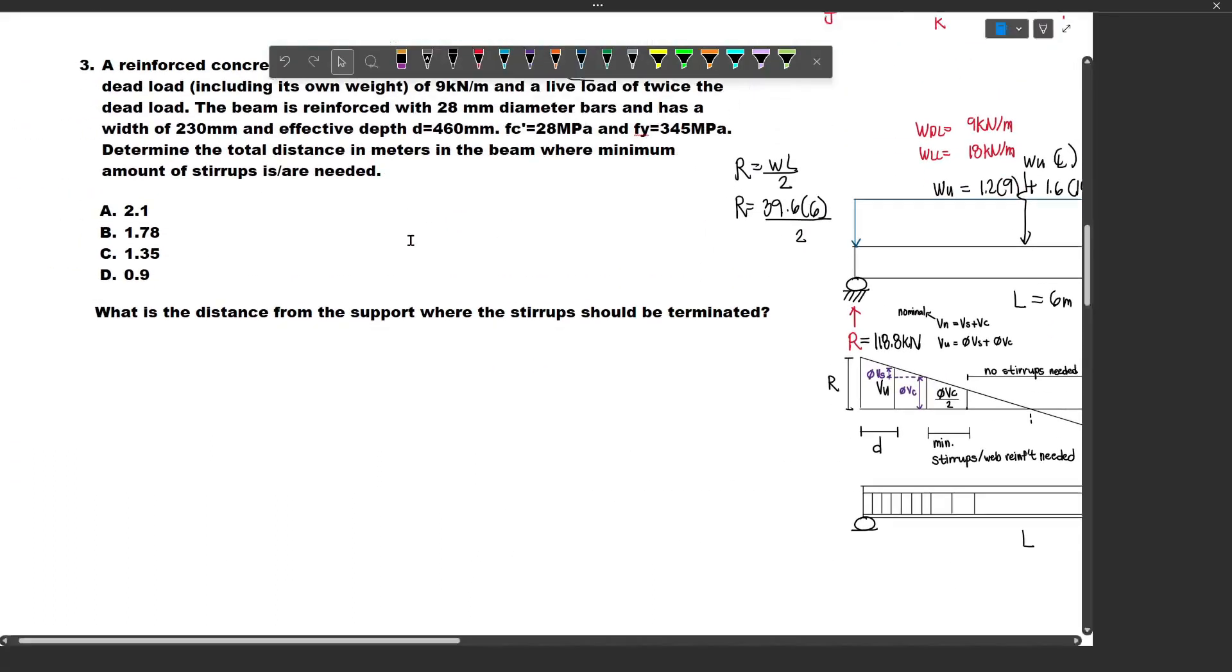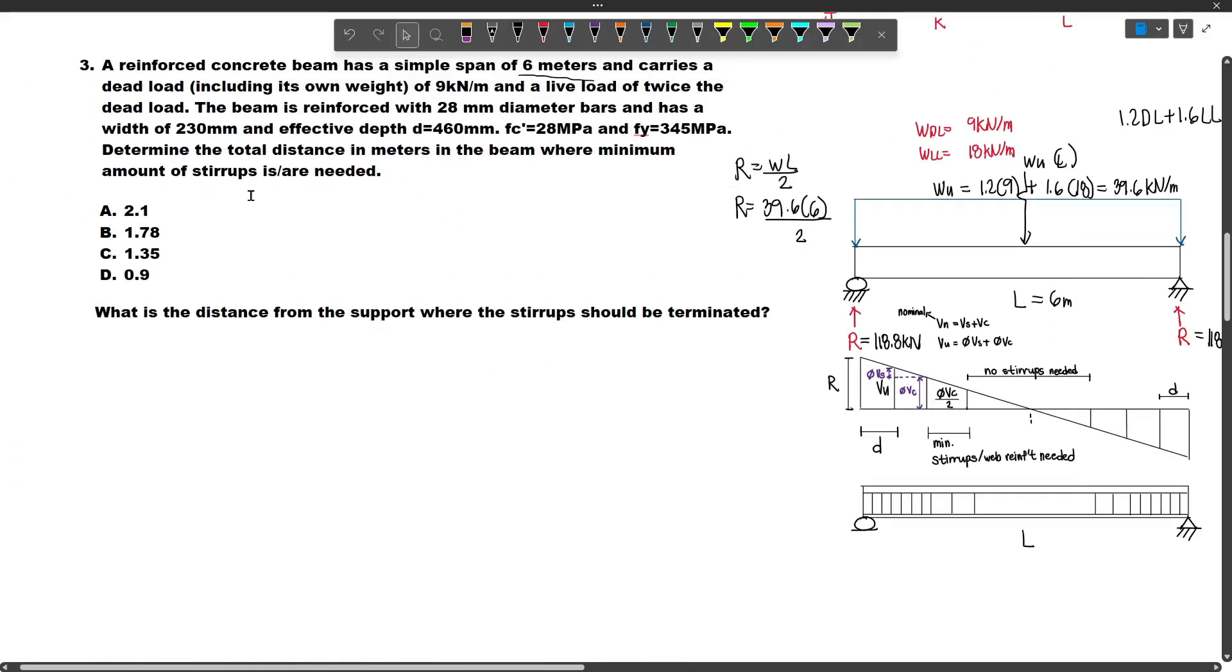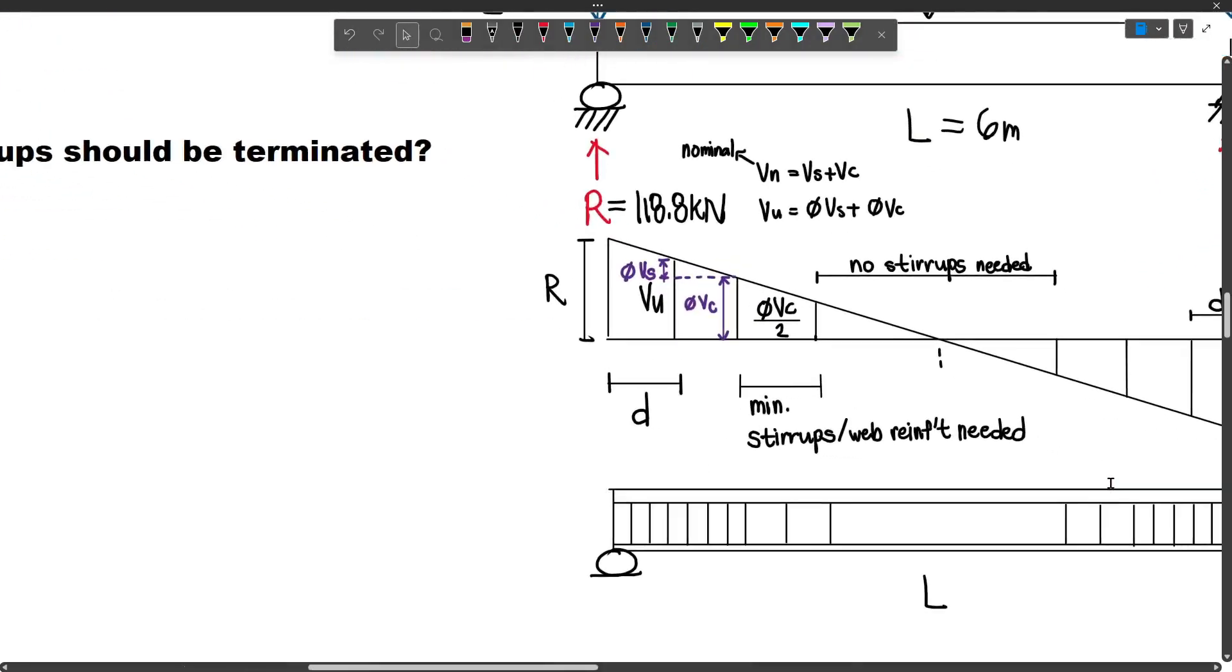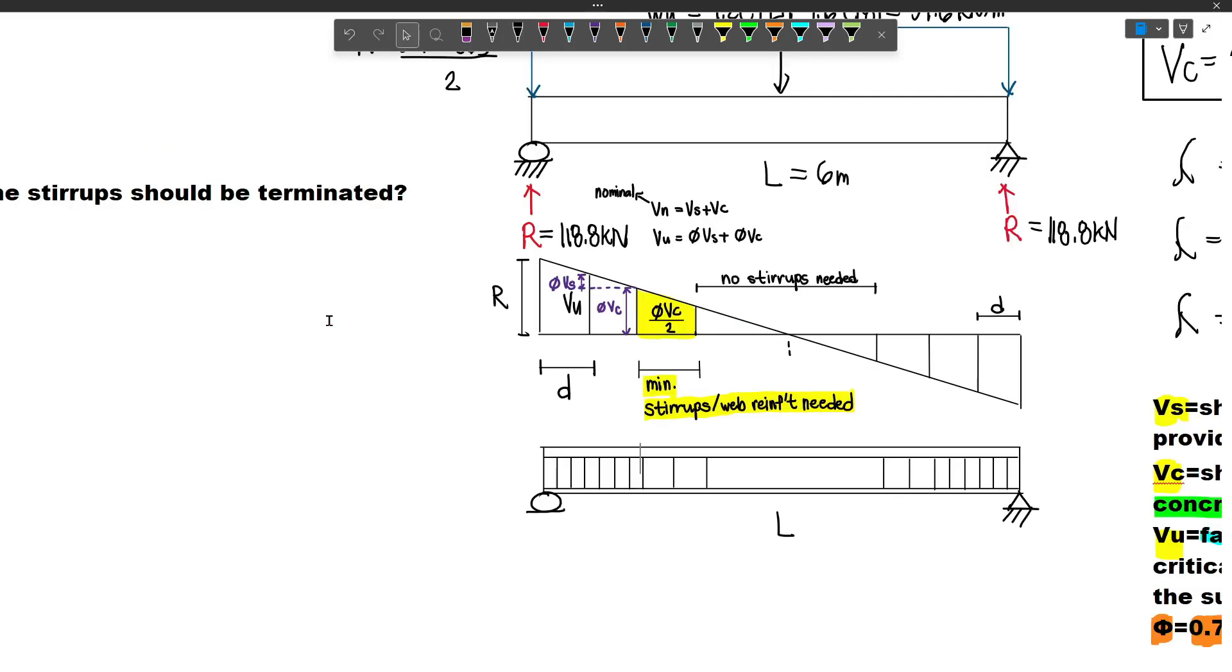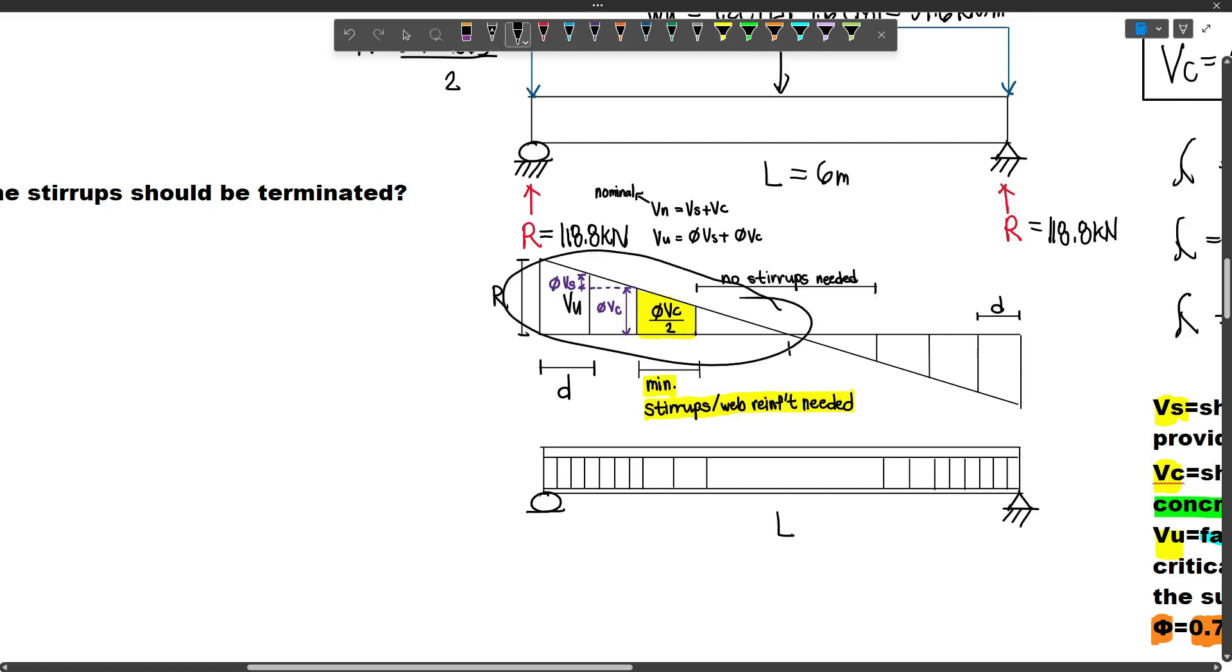Now we need to find the total distance in meters where minimum amount of stirrups is or are needed. This is the region where minimum stirrups or web reinforcement is needed. To compute the distance, we use ratio and proportion. If we consider the whole triangle, R is to this whole distance, which is essentially half of 6. Since the beam is symmetrical, the shear goes to zero at the middle. So R is to 3m equals phi VC over 2 to what distance? That's what we need to find.